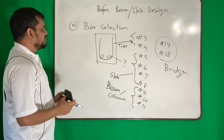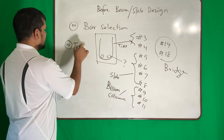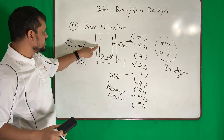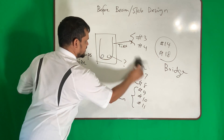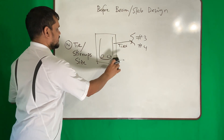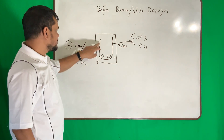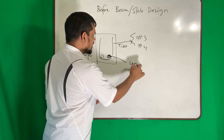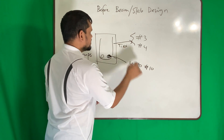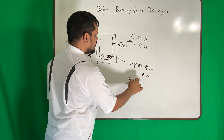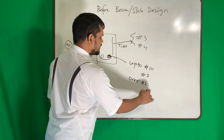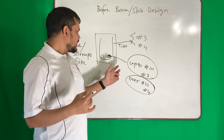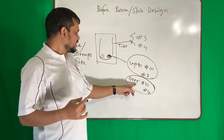Number four is tie or stirrup size — what is the size of the tie? If the main reinforcement is up to number 10, then the tie should be number 3. If the main reinforcement is over number 10, then the tie should be number 4.